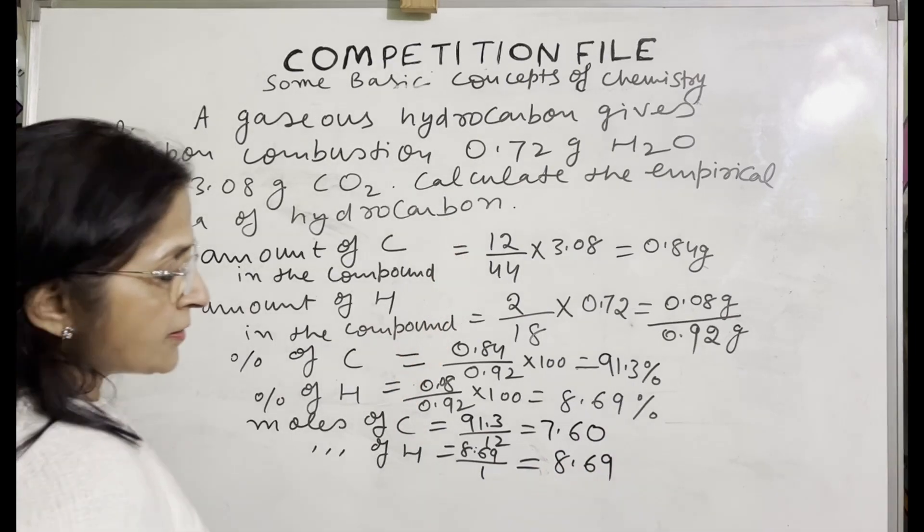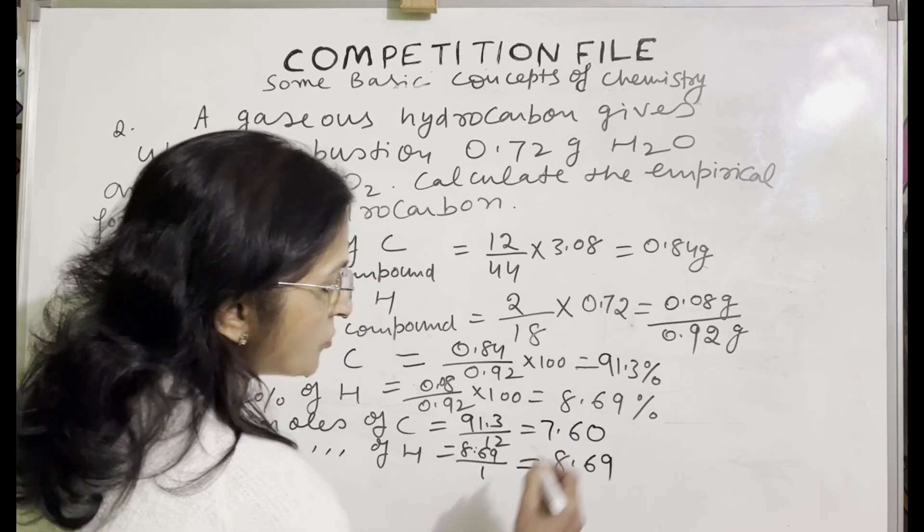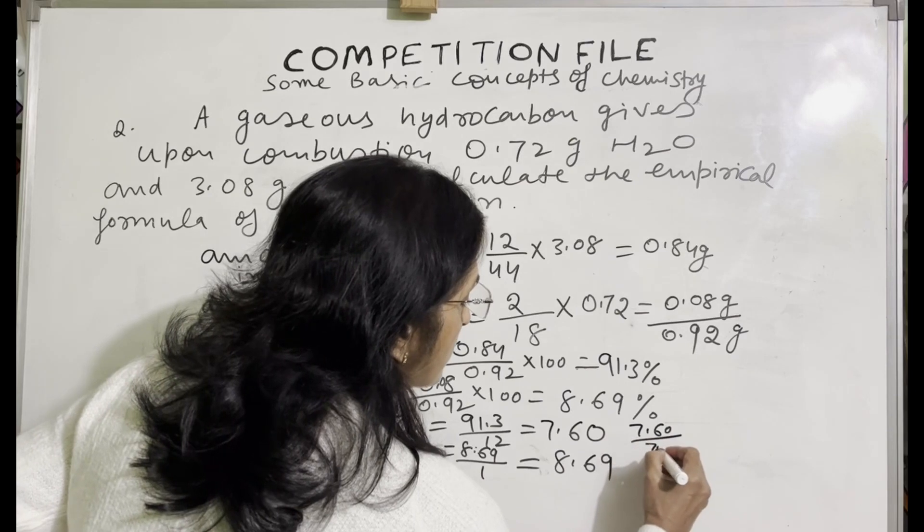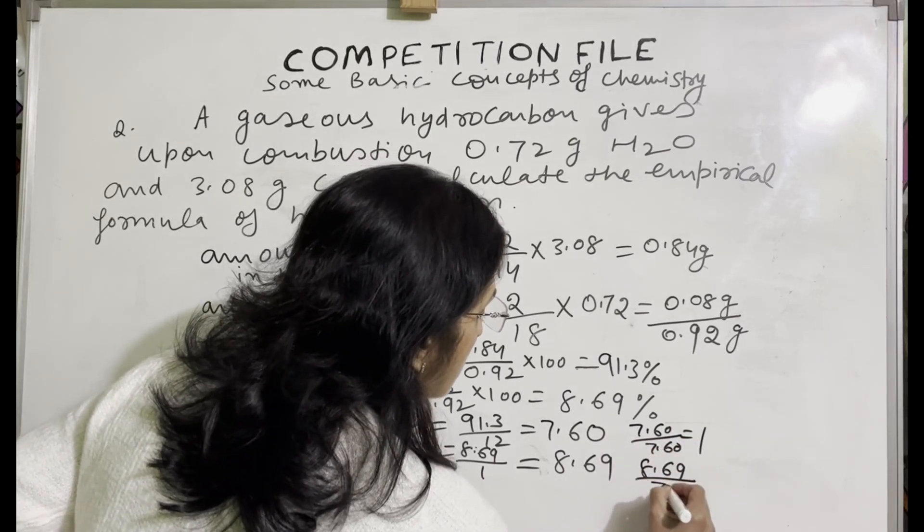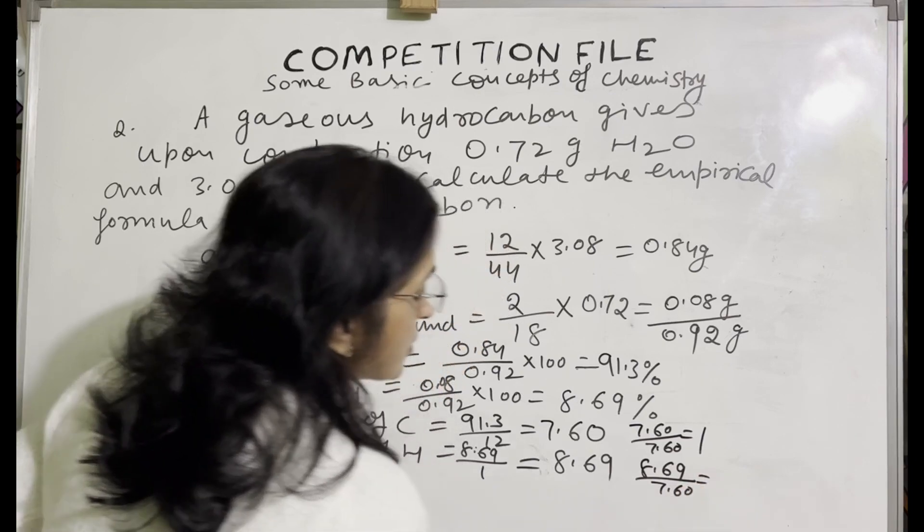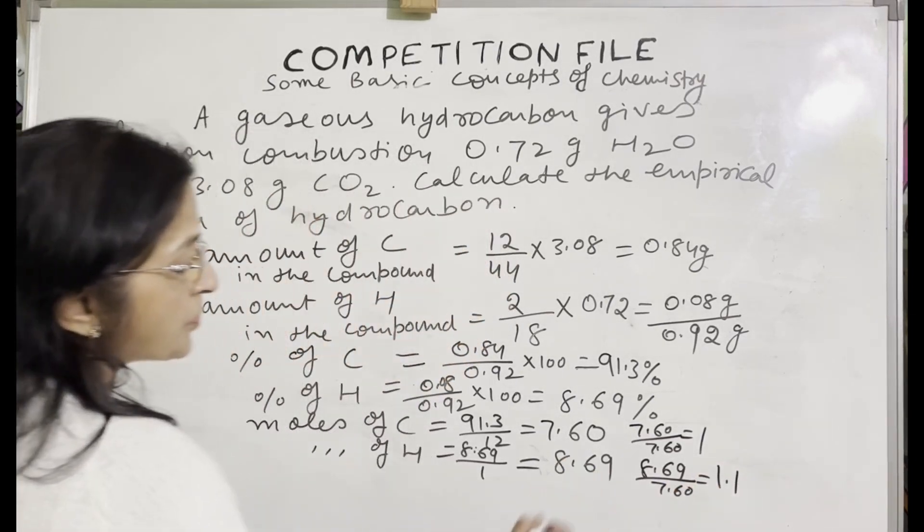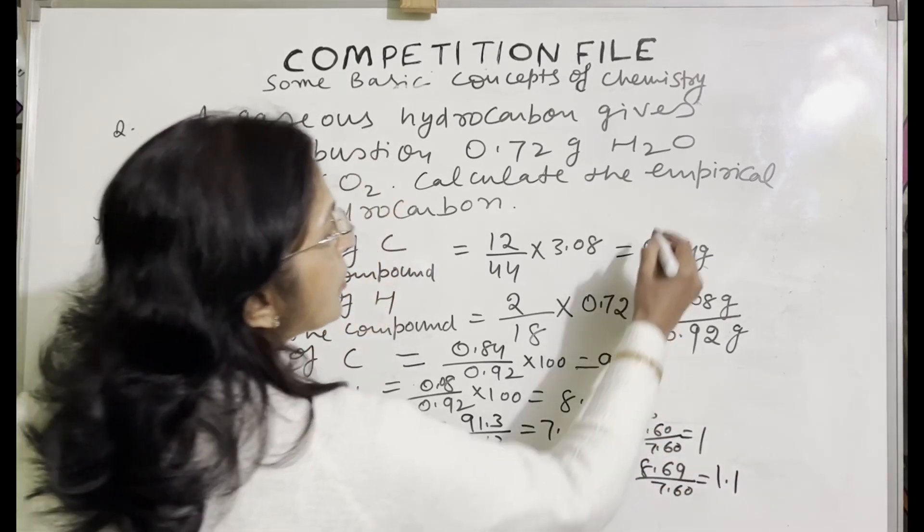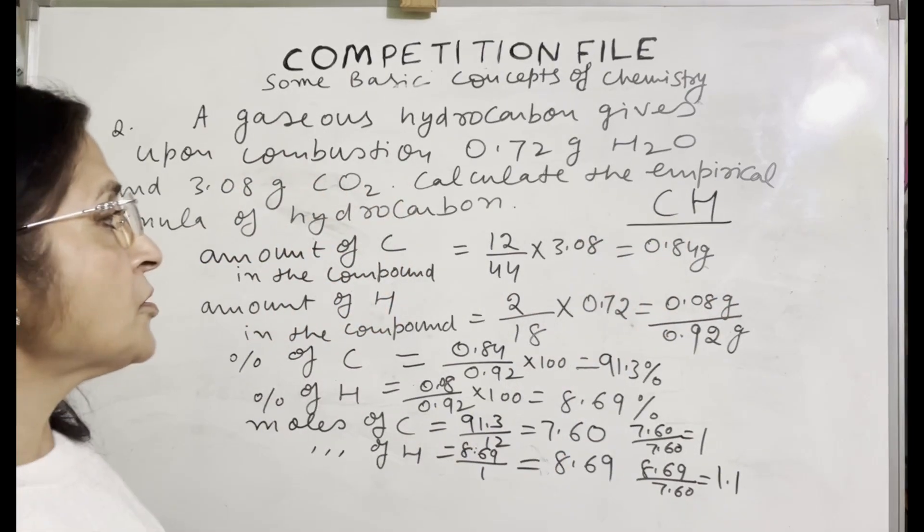Now you will find simple ratio between carbon and hydrogen. Divide both the values by 7.60. This value comes 1.1. So simple ratio between carbon and hydrogen is 1 is to 1. So empirical formula will be CH. Clear? The question is simple.